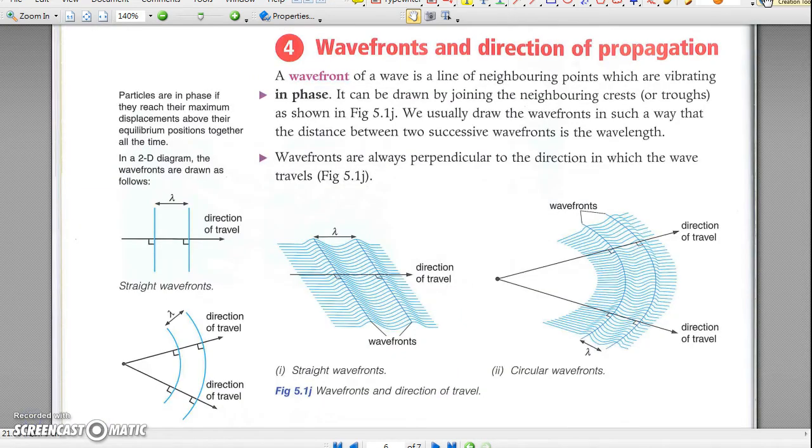Wave fronts and direction of propagation. To represent the shape of a wave, we draw wave fronts. A wave front is a line with all points vibrating in phase. For example, a wave front is a line of crests, as in Figure 5.1j. Note that the wave front is always perpendicular to the direction of travel of the wave.